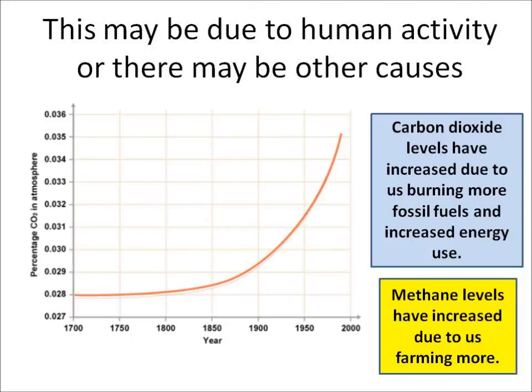What we know is that the average global temperature has gone up over the last 150 years. We also know that due to human activity, carbon dioxide levels and methane levels have gone up. So we know there is a correlation — a link — between carbon dioxide and methane levels and an increased global temperature. But do we know that human activity has directly caused this increase in temperature? That we don't know.